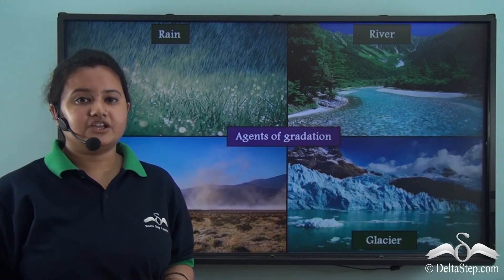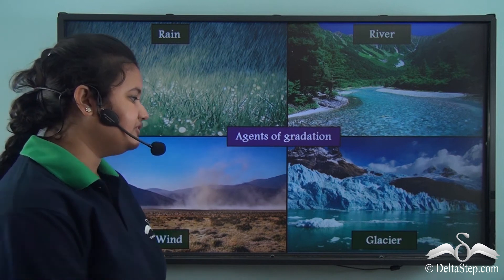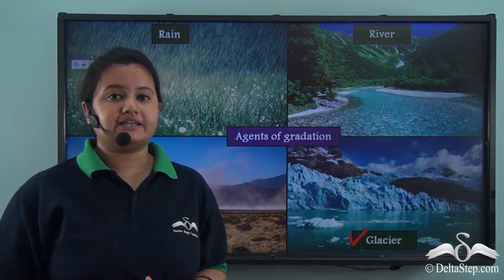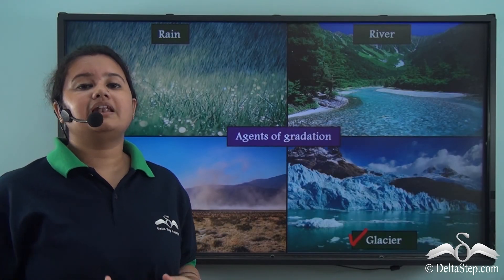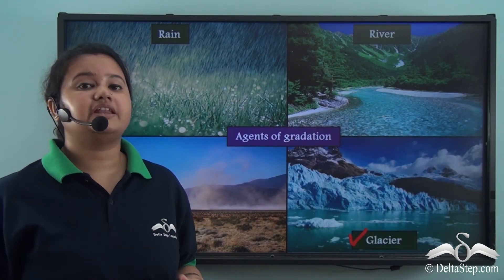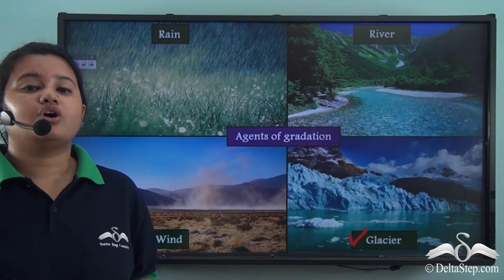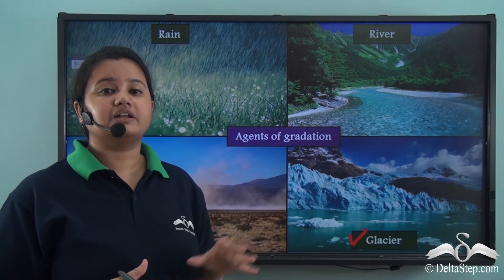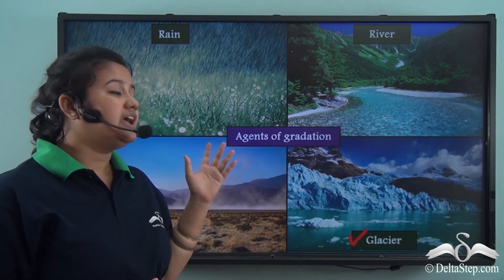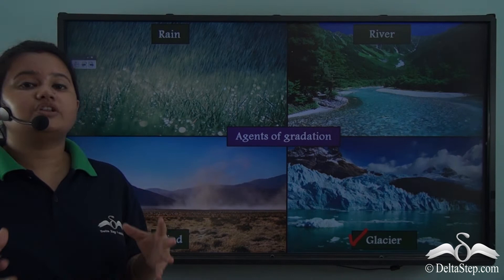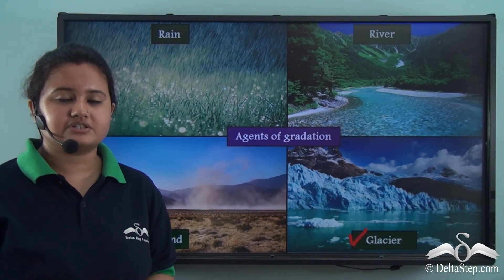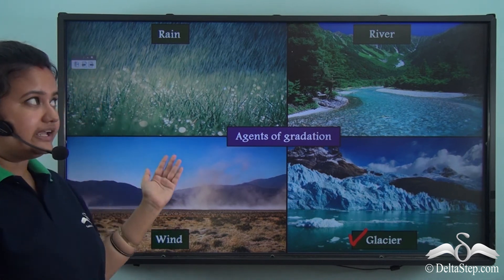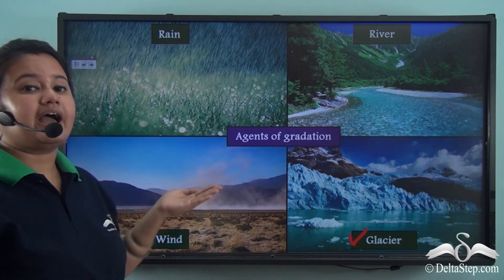The last agent of gradation is glacier. Glaciers are huge chunks of ice that scrape the land surface over which they move, and also deposit debris when they melt. So the agents of gradation are the natural forces active on the Earth's surface: rain, river, wind, and glaciers.